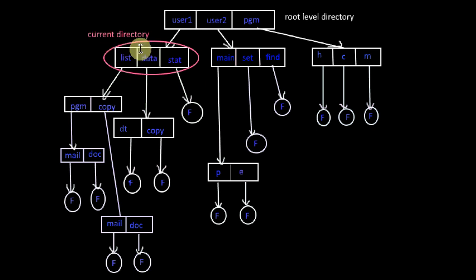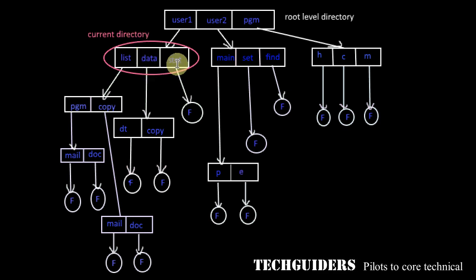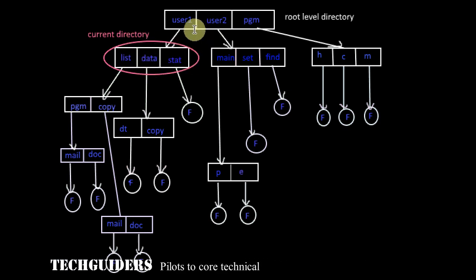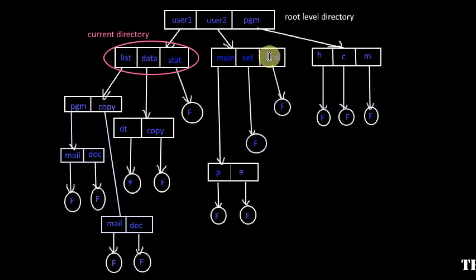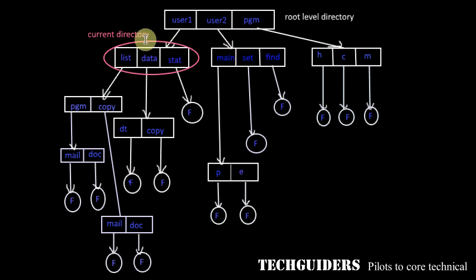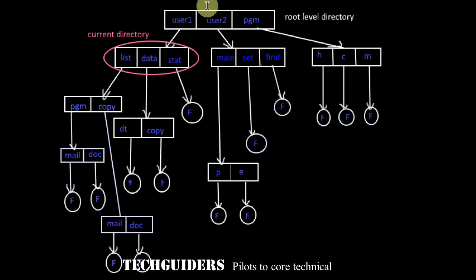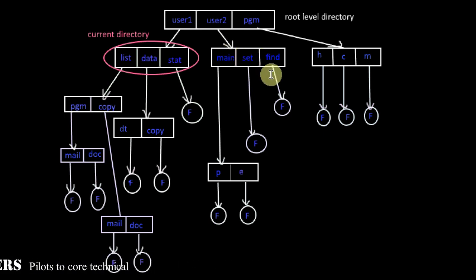The directory the user is currently working in is referred to as the current directory of the user. Whenever a file is referred to by just specifying the file name, the current directory is searched. If the file is not in the current directory, then the user should specify the path name. Similarly, if the user wishes to access a file in any other user's directory, he can access it by using the path name, only if access is permitted.